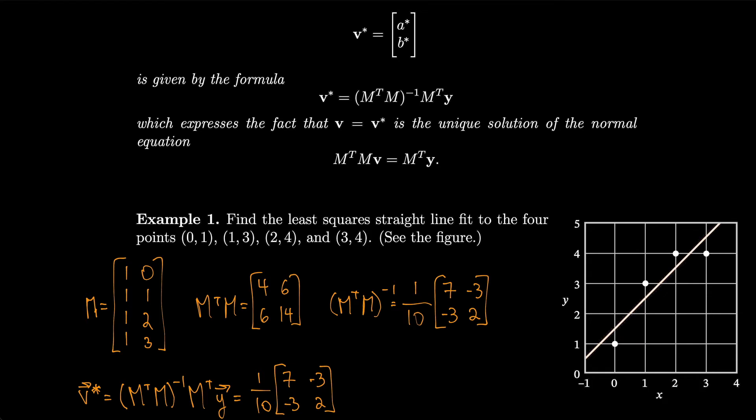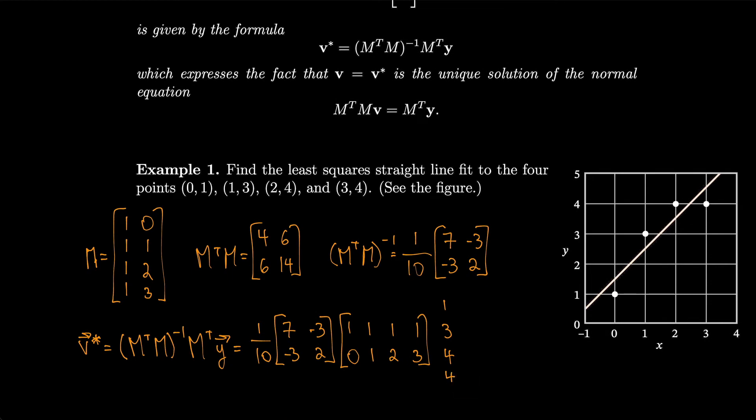Times M transpose, so that's [1, 1, 1, 1; 0, 1, 2, 3]. And then we have to multiply by y, which was [1, 3, 4, 4], so all of our y values. Okay, so then multiplying all of that out, we should get [1.5, 1] for v*.